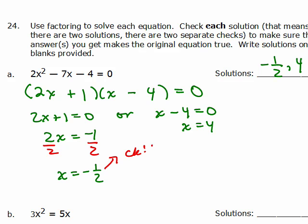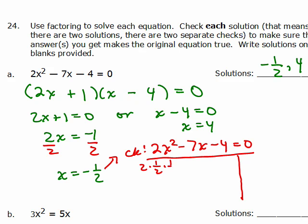You check negative 1 half into 2x squared minus 7x minus 4 equals 0, by plugging in negative 1 half for x. So you have 2 times, well, x squared is 1 half times 1 half, minus 7 times 1 half, I'm sorry, I'm plugging in negative 1 half, negative 1 half, negative 1 half, there we are.